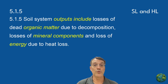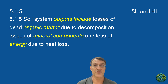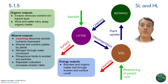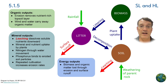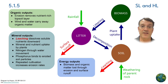Soil system outputs include losses of dead organic matter due to decomposition, losses of mineral components, and losses of energy due to heat loss. Organic matter is lost through erosion, which removes the nutrient-rich topsoil layer, and through wind and water carrying away organic material. Mineral outputs occur through leaching, which dissolves soluble nutrients and moves them downward, and through plant uptake of minerals and nutrients. Phosphorus often binds to eroded soil particles while nitrogen moves through water. Repeated cultivation significantly increases erosion rate, making soil management really important for sustainability.